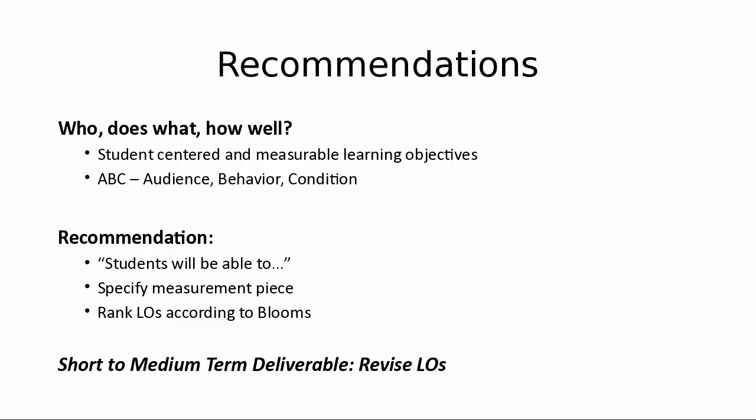The other key piece is that it's measurable. You want to be specific enough so the student actually knows by what means they're going to achieve this learning objective. For example: by the end of this module, you will be able to recognize three aspects of Theory X. 'Three aspects' — that's measurable. The student knows there are three things they need to figure out. Making that connection in the learning objectives is very important.